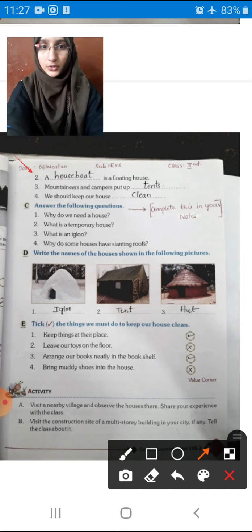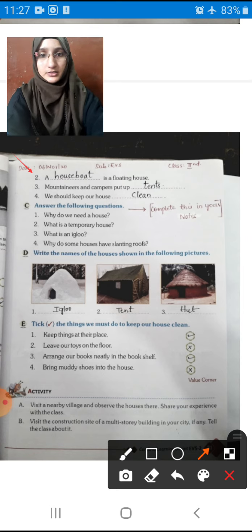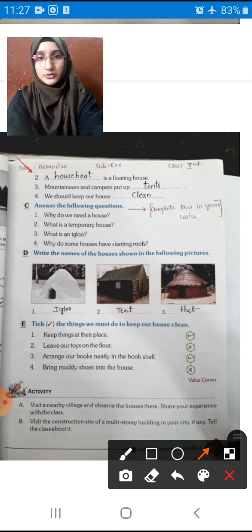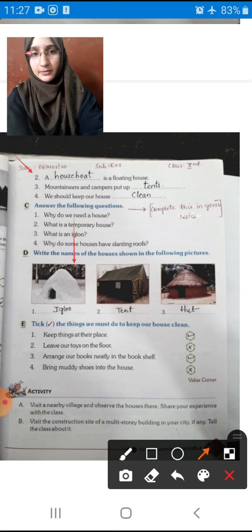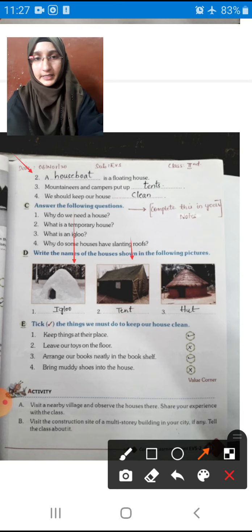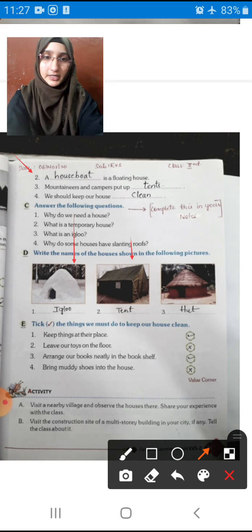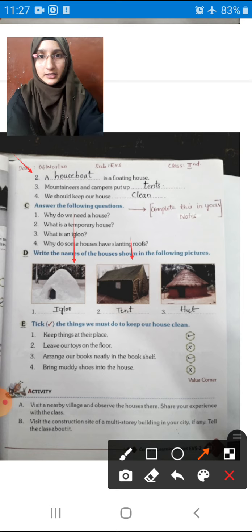Now C bit: Answer the following question - I will show you at the last of the video. Now D one: Write the names of the houses shown in the following pictures. We have to observe the picture given here and write the names. Can you observe the first picture? White color, how it is made of ice. This is called igloo children. Write down I-G-L-O-O, igloo. Second one is made up of cloth. This is tent, T-E-N-T. Third one is made up of mud and straw grasses. So it is called hut children: H-U-T, hut.